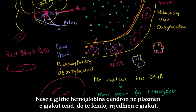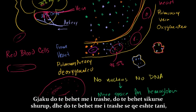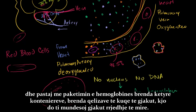If you had all of the hemoglobin sitting in your blood plasma, it would actually hurt the flow of the blood. The blood would become more viscous or more thick — not quite like syrup, but thicker than blood is right now. By packaging the hemoglobin inside these containers, inside the red blood cells, it allows the blood to flow a lot better.